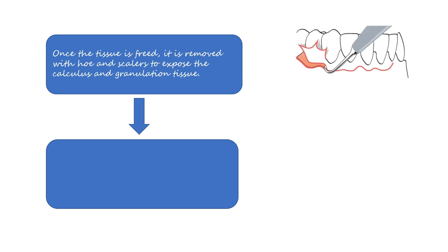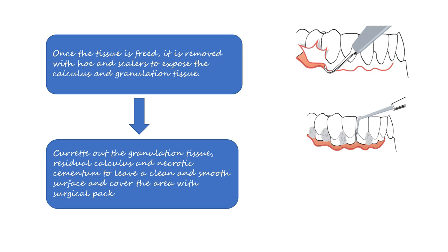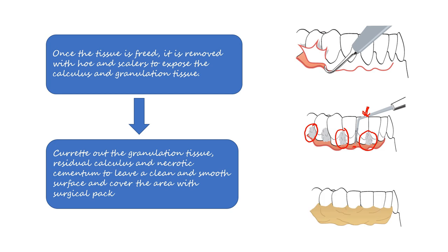Once the tissue is freed it is removed with the help of Hoen scalers to expose the underlying calculus and granulation tissue. As soon as the tissue is removed, bleeding starts, so gauze pieces are packed interproximally to control the hemorrhage. Next, after controlling the bleeding, all calculus and granulation tissues are removed, and a probe is used to measure the residual pockets. Then we have to cover the surgical area with a surgical pack, which should be closely adapted to the site and tucked into the interproximal spaces, remaining there for 10 to 14 days.